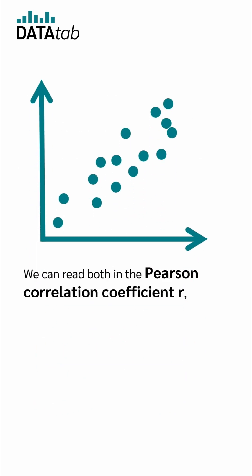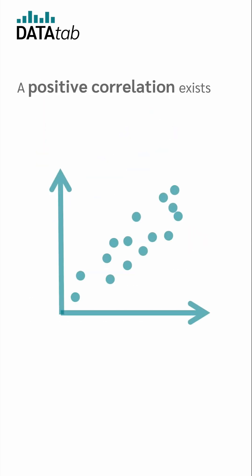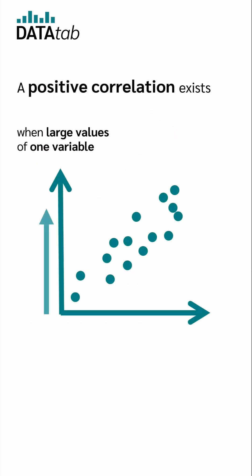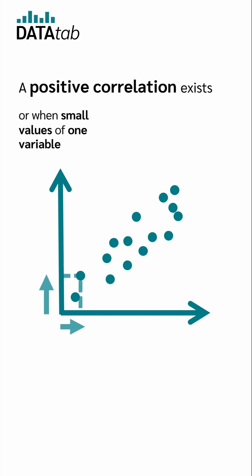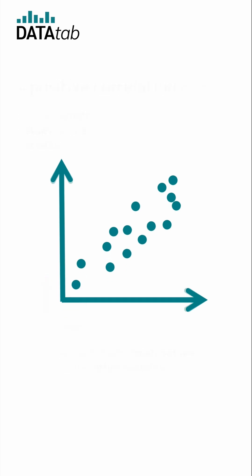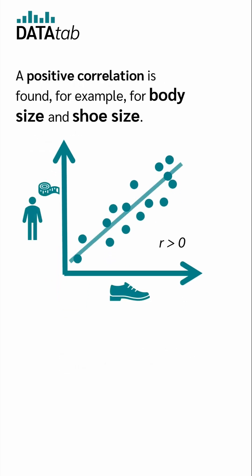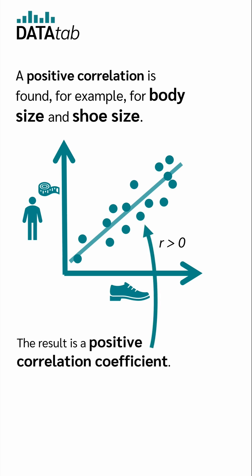We can read both in the Pearson correlation coefficient r, which is between minus 1 and 1. A positive correlation exists when large values of one variable go along with large values of the other variable, or when small values of one variable go along with small values of the other variable. A positive correlation is found, for example, for body size and shoe size. The result is a positive correlation coefficient.